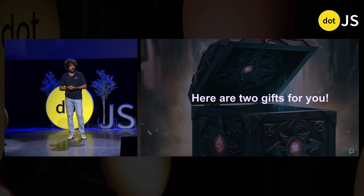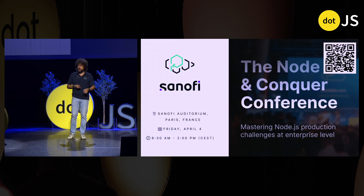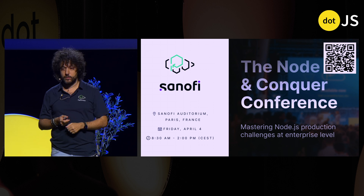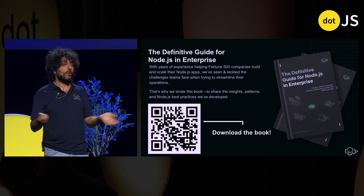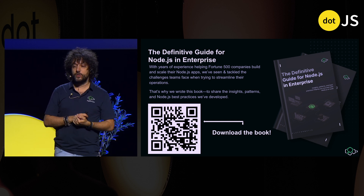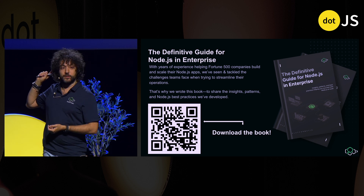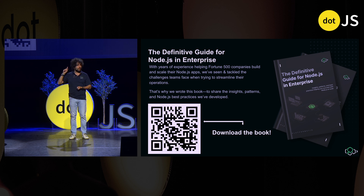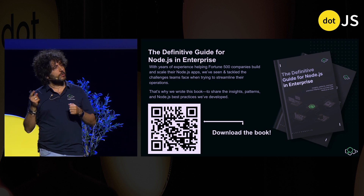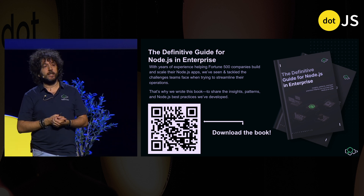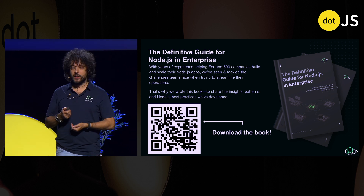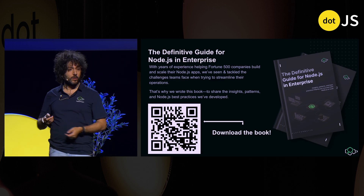Before we finish, I have two gifts. If you're into running Node.js in production, tomorrow I'll be at the Sanofi Auditorium for an event — it's free, just scan the QR or ping me on social. Also, I'm releasing a book today: the definitive guide for Node.js in the enterprise — almost 296 pages, with recipes for Kubernetes, auto-scaling, monitoring, Node with Express, Fastify, and even Next.js on-prem. Thank you very much, everyone.